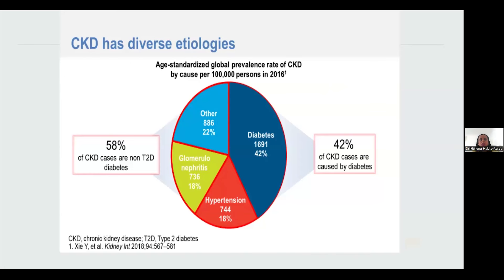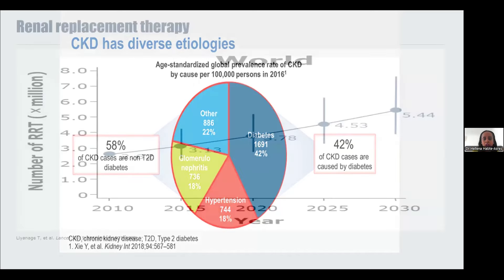Most people with CKD have developed it as a result of diabetes, making diabetes primarily responsible. Other causes include hypertension, glomerulonephritis, and polycystic kidney disease. When we look at dialysis or kidney replacement therapy, diabetes is the leading cause of kidney failure globally. Currently around 4 million people are using kidney replacement therapy, and that's projected to rise to just under 6 million by 2030.